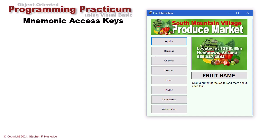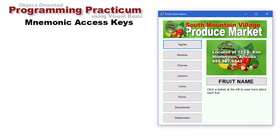I'm revisiting the project we did in unit 2 on changing properties. I added an extra button here for limes — I wanted two fruits that both started with the letter L for a demonstration of key mnemonics. A mnemonic key is one that gives access to a control without having to use the mouse.